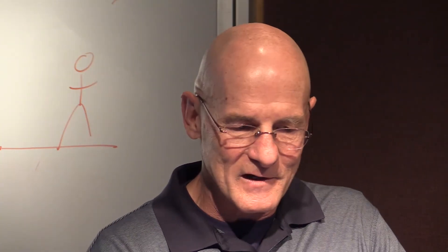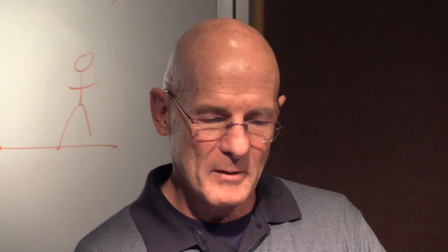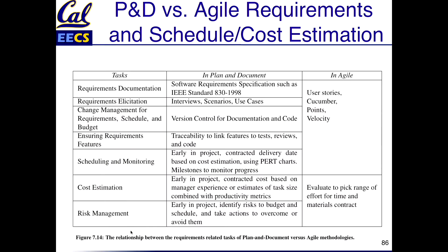So those are all the things you need to do as a manager. Putting it side by side in a table: the seven plan-and-document steps — requirements elicitation, documentation, change management, schedule/budget, ensuring requirements/features, scheduling and monitoring — correspond to Agile's user stories, points, and velocity. User stories, points, and velocity are relatively intuitive compared to all of this. The cost estimation is a loosey-goosey thing; instead of promising and delivering features with extensive risk management, in Agile you're doing it on a best-effort approach. This is the alternative universe that many people use, and understanding it helps you see what's different about Agile.